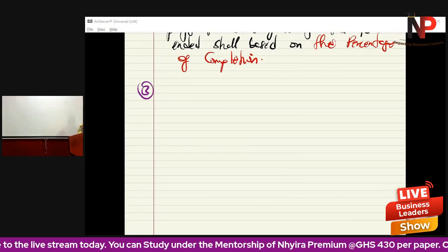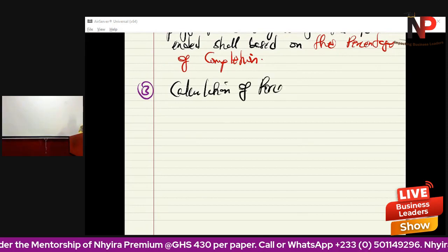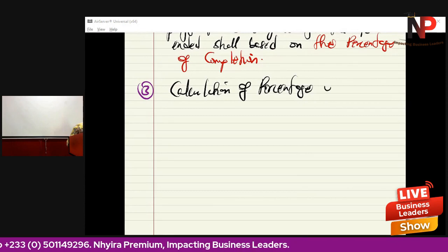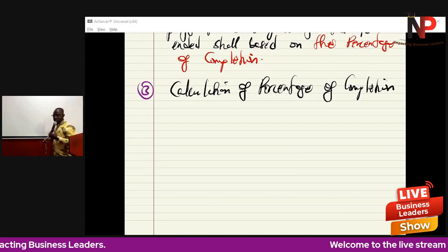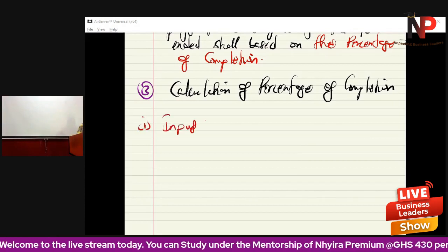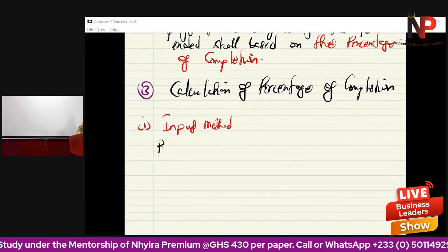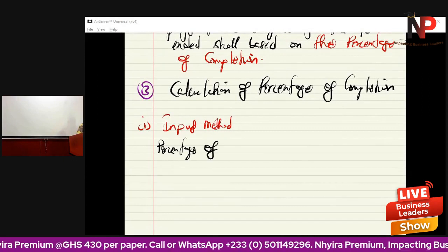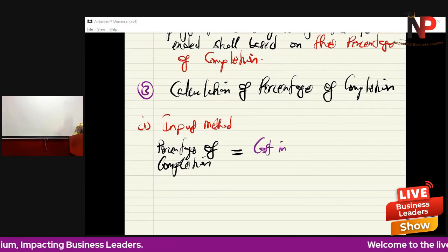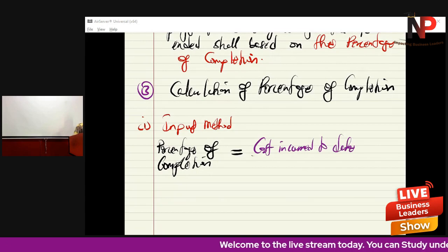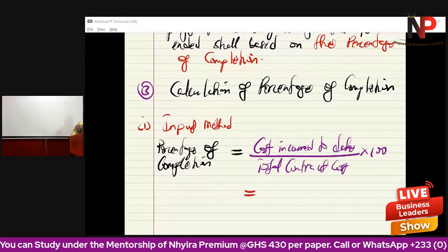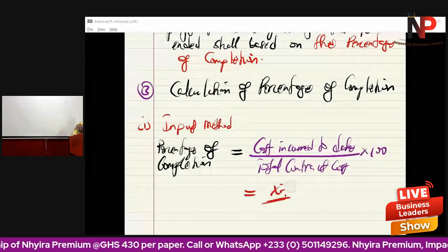This is where the calculation of percentage of completion comes in — step three. With the input method, the percentage of completion equals: cost incurred to date divided by total contract cost, multiplied by 100 — giving us a result expressed as a percentage.